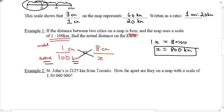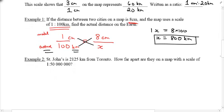Okay, try example number two. St. John's, that's in Newfoundland, way on the east coast, is 2,125 kilometers from Toronto. How far apart are they on a map with a scale of 1 to 50 million? Whoa! So once again, there are no units here, so you might want to convert this into kilometers if you like smaller numbers.